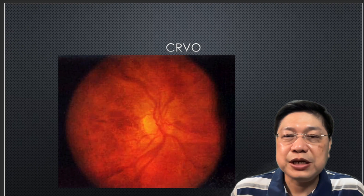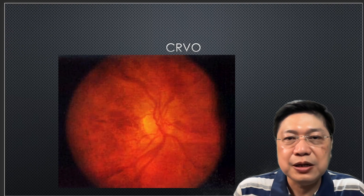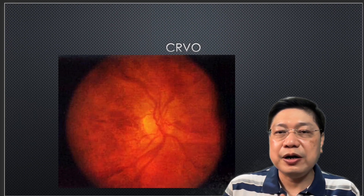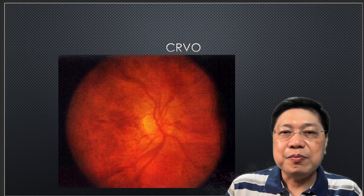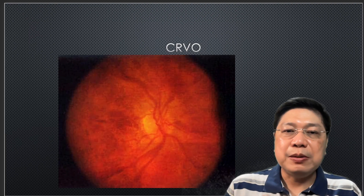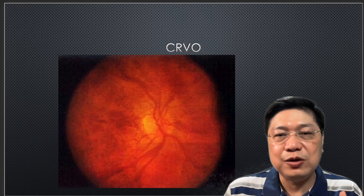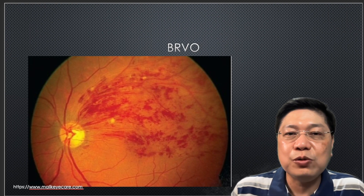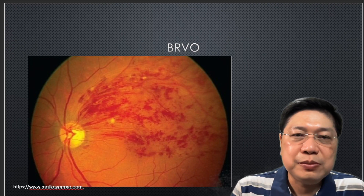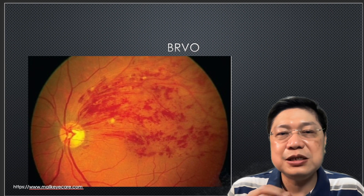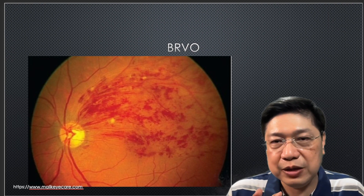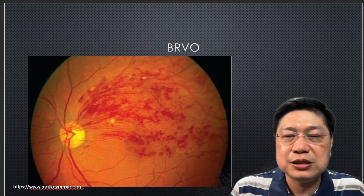The other one is CRVO — central retinal vein occlusion. It's the central vein that got blocked. You can see bleeding all over — basically like a high-pressure system: your arteries are still pumping blood inside the eye, but the drainage is no longer functioning because the vein is blocked. You know it's a central retinal vein occlusion when all four quadrants of your retina have the bleed. It's a branch retinal vein occlusion when only one part shows bleeding — meaning only one branch became clogged — whereas central vein occlusion affects all four quadrants.